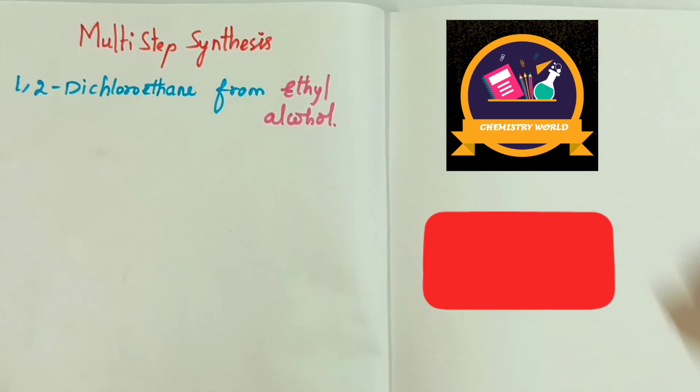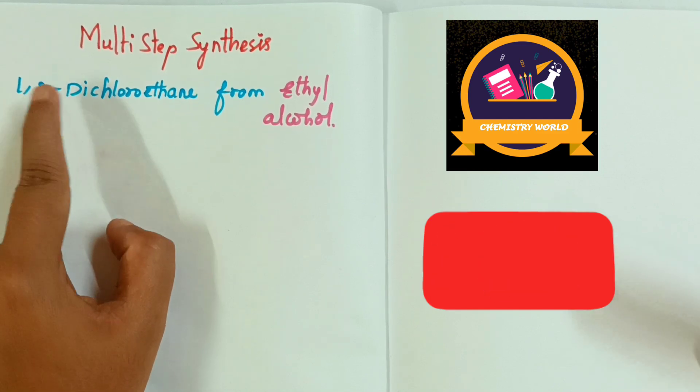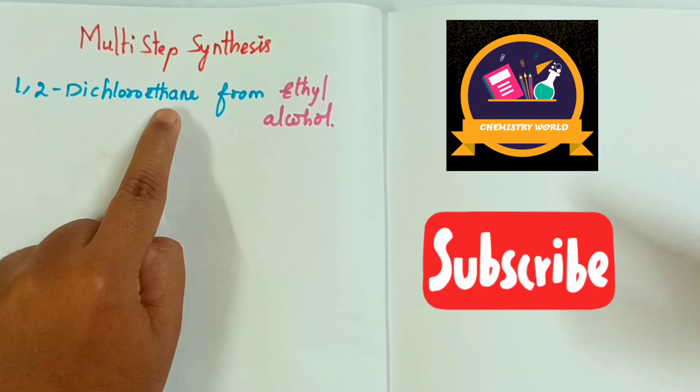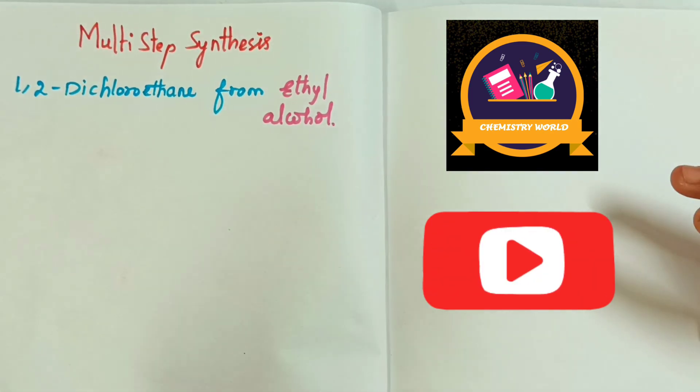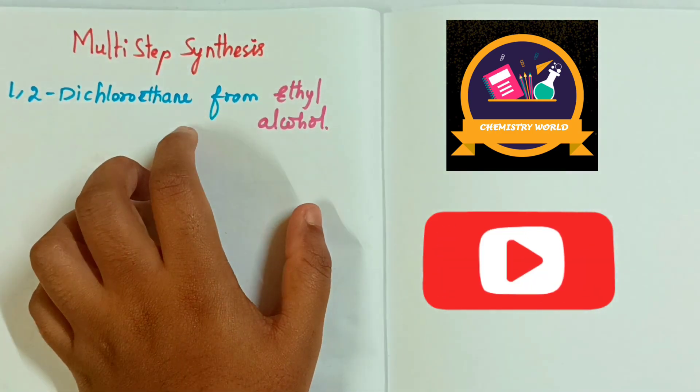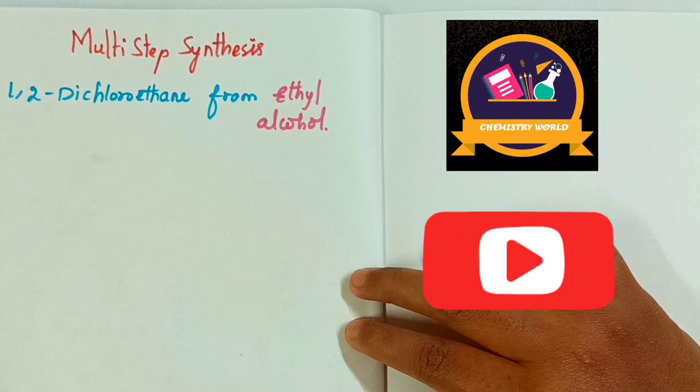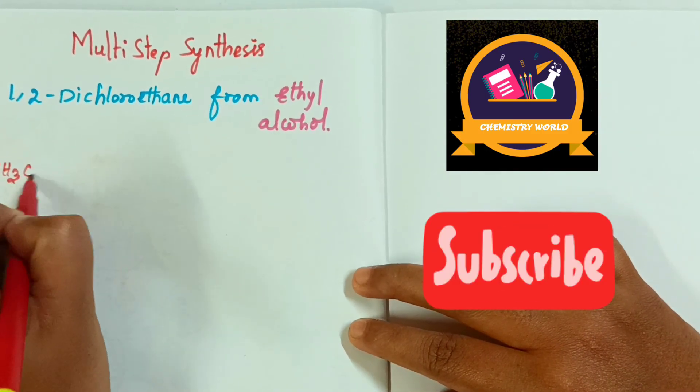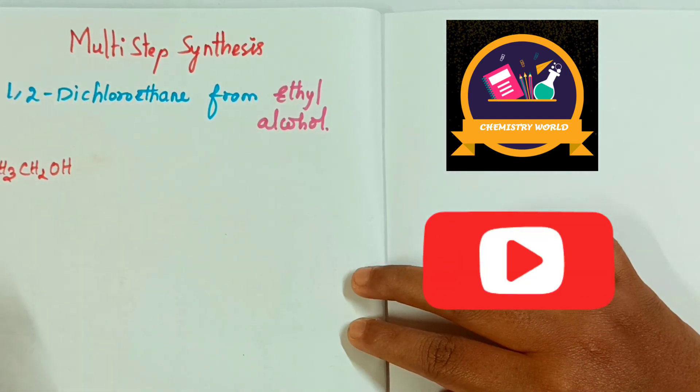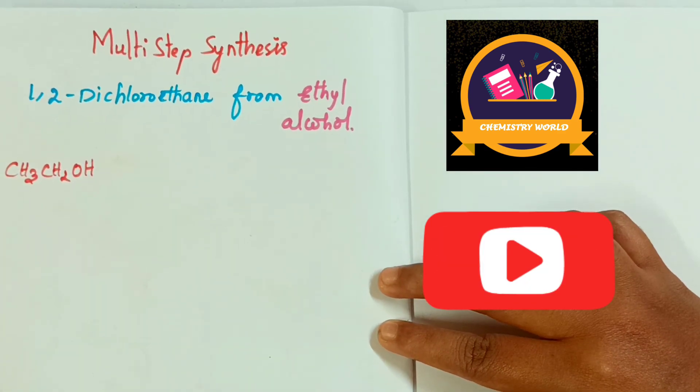1,2-dichloroethane. 2 chlorine groups. Ethane group is attached. Single bond. Single bond is alkanes. From ethyl alcohol. Let's prepare ethyl alcohol. First, the formula of ethyl alcohol. What is the formula for ethyl alcohol? Very good. CH3CH2OH. This is the formula for ethyl alcohol. How do we prepare 1,2-dichloroethane from ethyl alcohol?